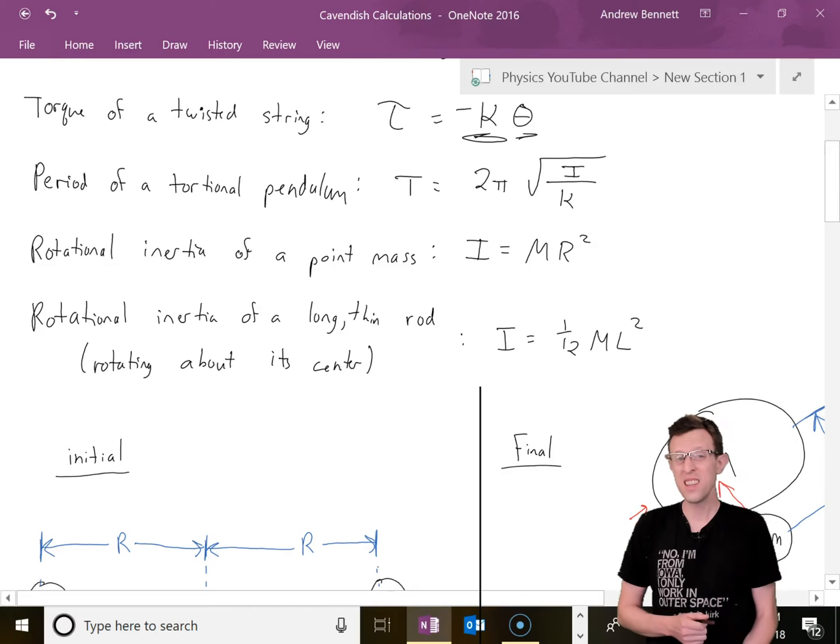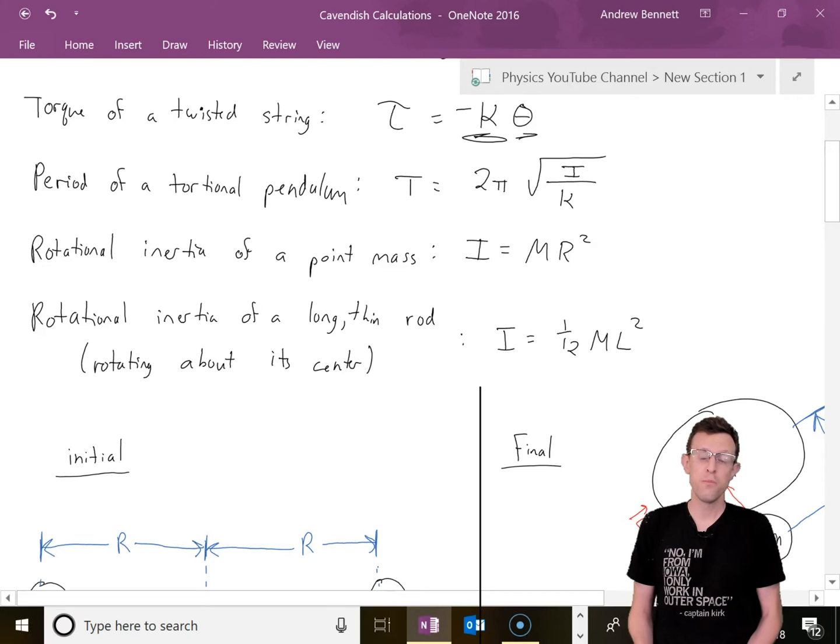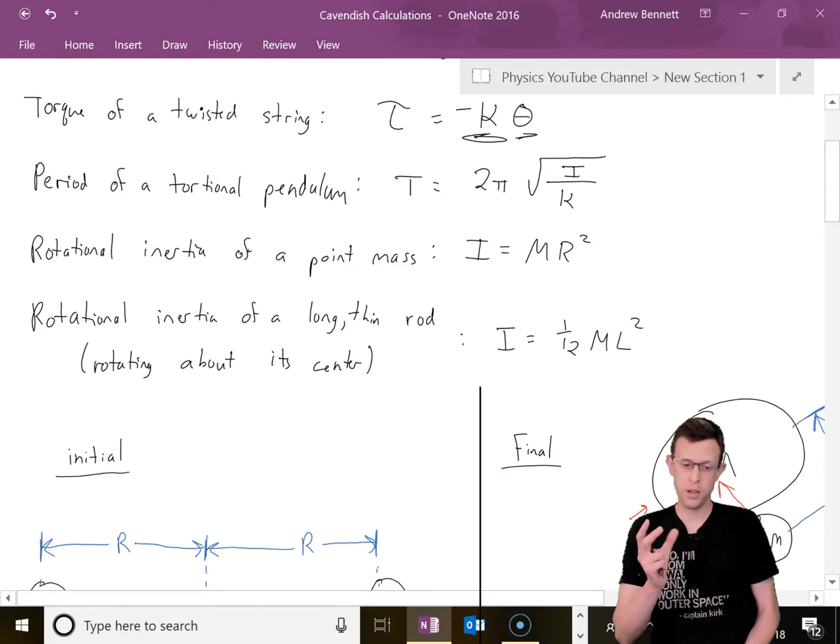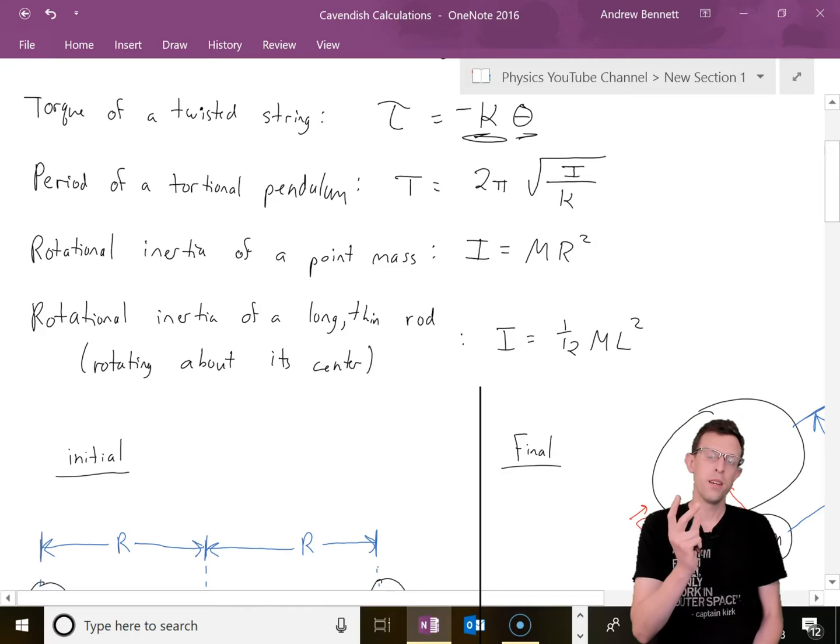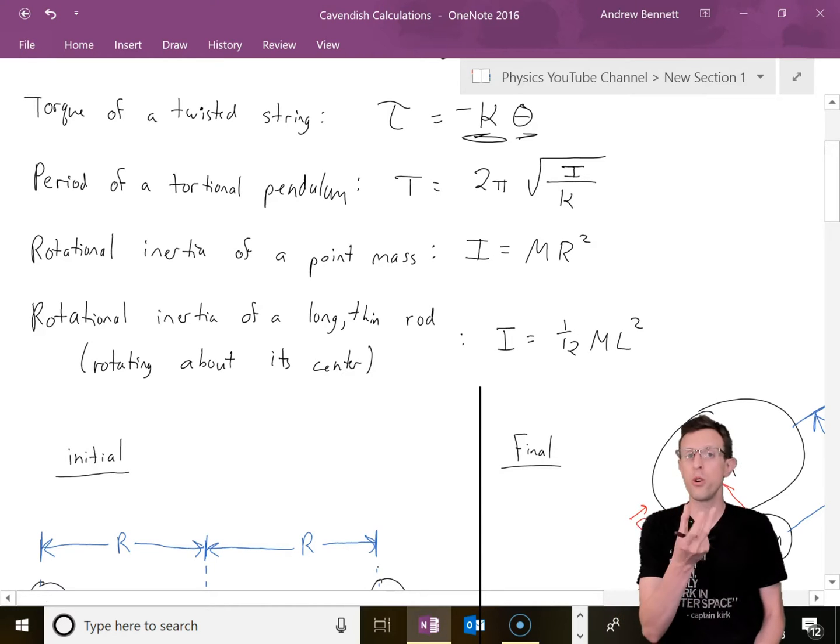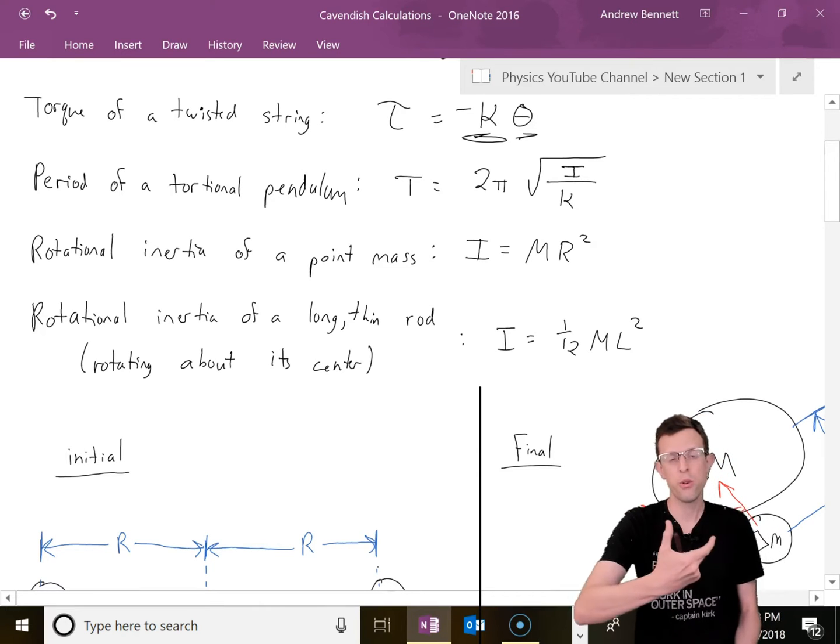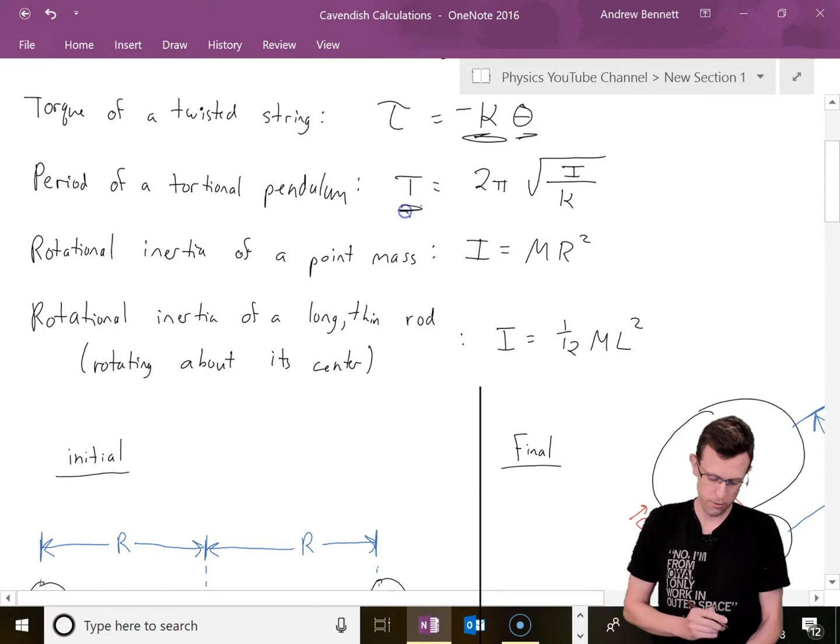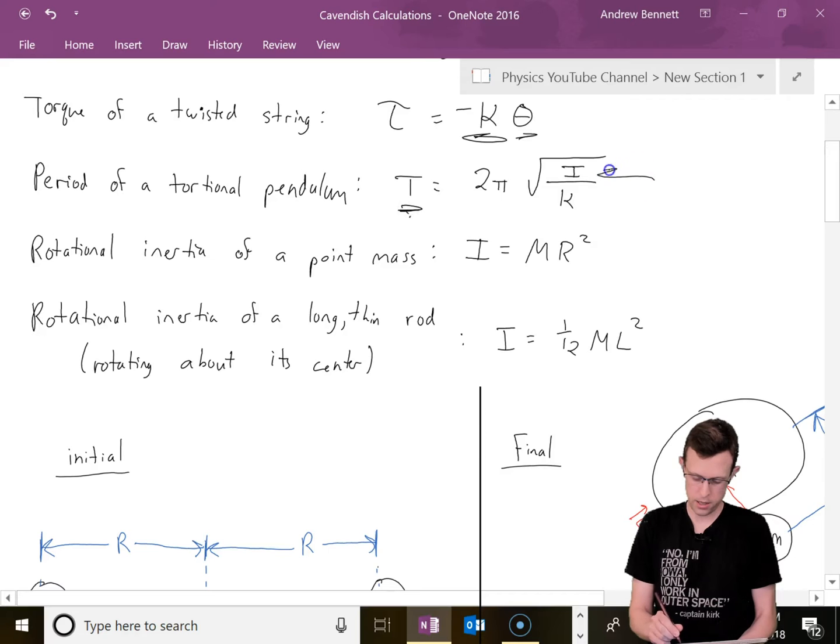Also important, we need that value for kappa at some point, and it's tough to measure directly. What we're going to do instead, and what Cavendish did as well, is to use this equation for the period of a torsional oscillator. The period T equals 2 pi square root of I over kappa, where I is the rotational inertia and kappa is that constant of torsion.